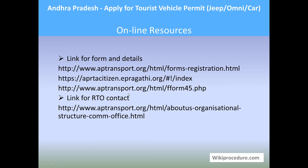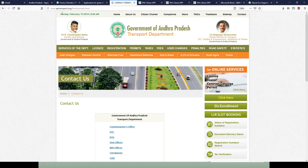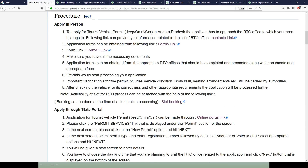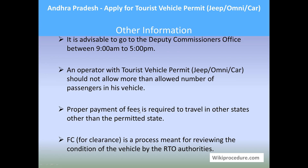Online resources: we have seen the form resource, the e-Pragati resource, and the contact page on the website. All information provided on these websites is very useful for completing the procedure, and links are provided at appropriate places in our page to save your valuable time. Other information: it is advisable to go to the deputy commissioner office between 9 AM and 5 PM. An operator with a tourist vehicle permit should not allow more than the allowed number of passengers. Proper payment of fees is required to travel in states other than the permitted state. Fitness Certificate (FC) is a process for reviewing the vehicle's condition by RTO authorities. Thank you for visiting wikiprocedure.com.